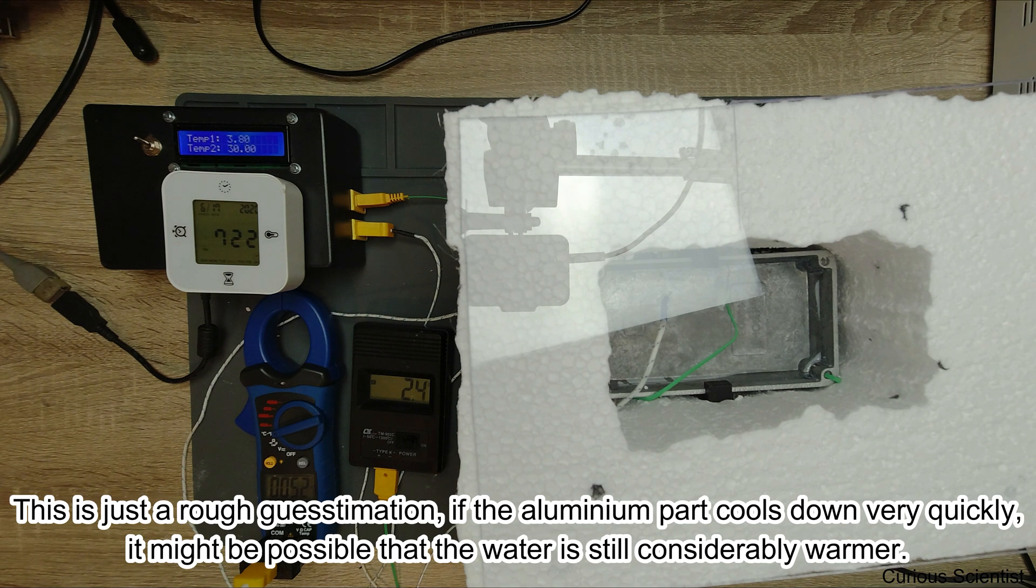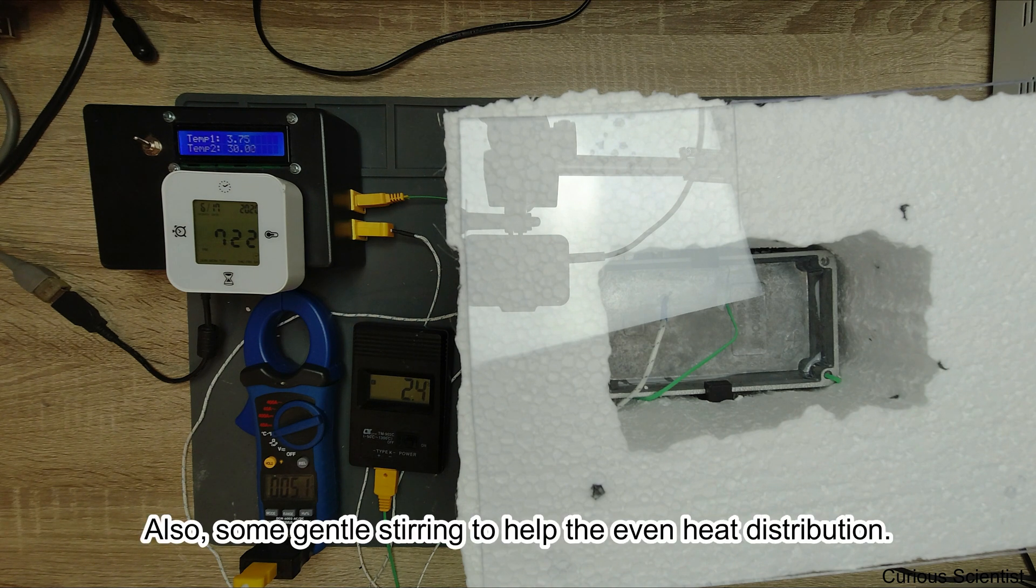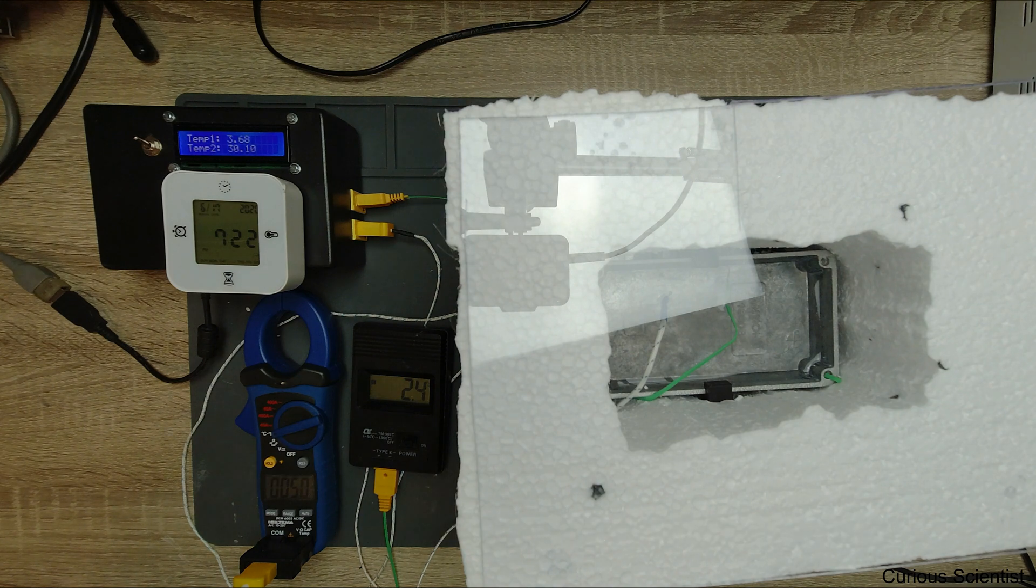It would be nice to use another thermometer just to be sure, but this is what I have now. We are more or less close to delta T equals 30 degrees. That was my goal, and we reached it. Now I will do the calculations.